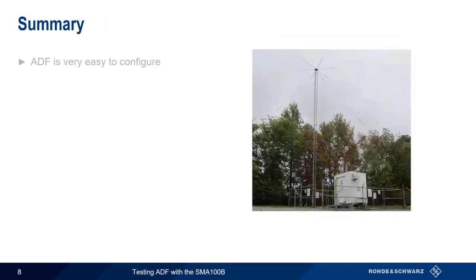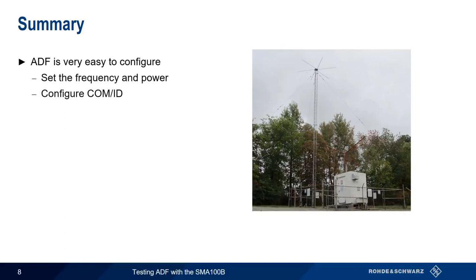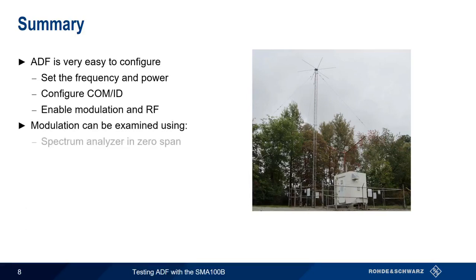As you've seen, ADF is very easy to configure on the SMA-100B. Just set the RF frequency and power, configure the COMID parameters, and enable modulation in RF. The two easiest ways of examining ADF modulation are using a spectrum analyzer in zero-span mode, or a simple AM radio. This concludes our short presentation, Testing ADF with the SMA-100B. Thanks for watching.